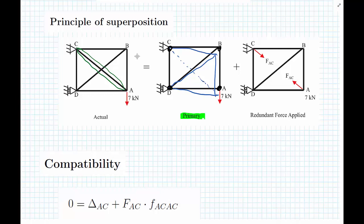The second indeterminate structure is if we have the same structure as the primary structure but instead of the seven kilonewton load, we apply a force F_AC and we want to apply just enough force to remove the residual amount of deflection Delta_AC and get back to the original position.